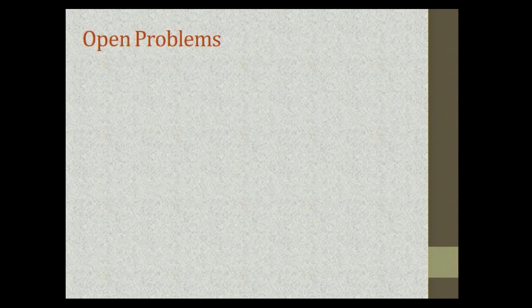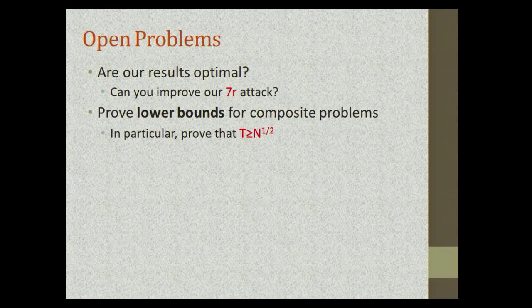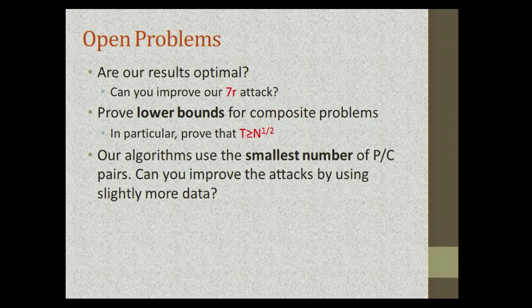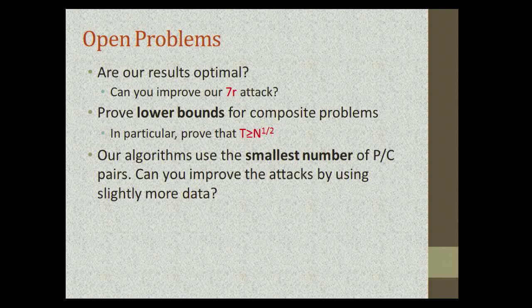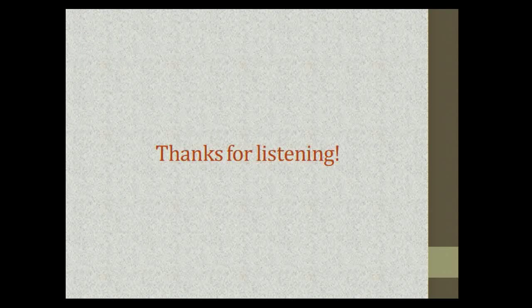Many open issues remain. Are our results optimal — in particular, can the seven-round attack be improved? Another open problem is proving lower bounds for composite problems; we don't even know how to prove the seemingly trivial bound that time equals the square root of capital N. Another open problem is whether attacks can be improved using more plaintext-ciphertext pairs. And of course, we want to find additional applications for our dissection algorithms. Thank you.